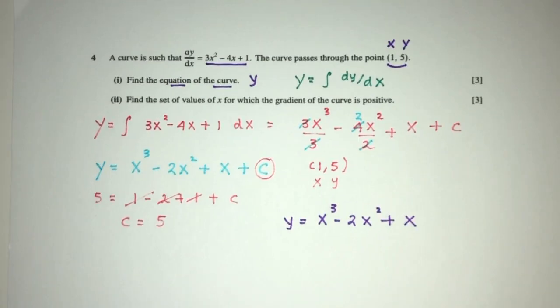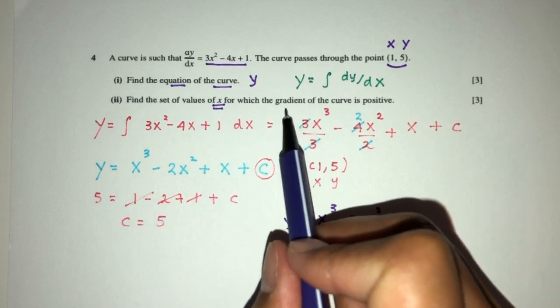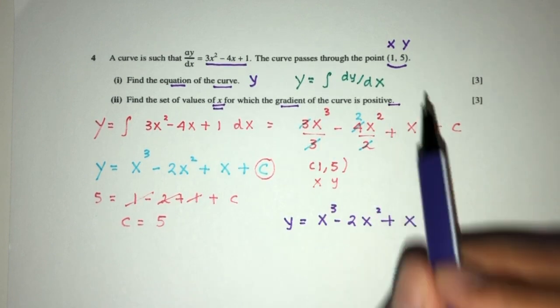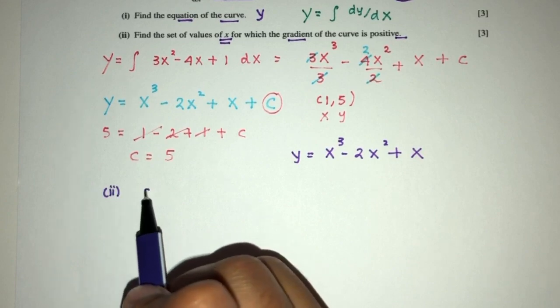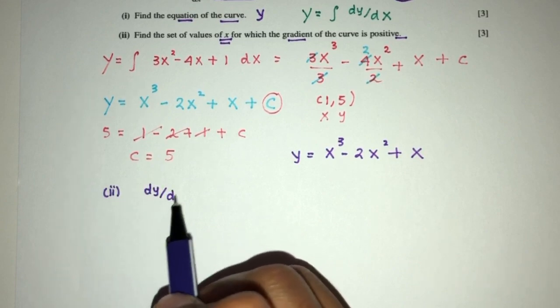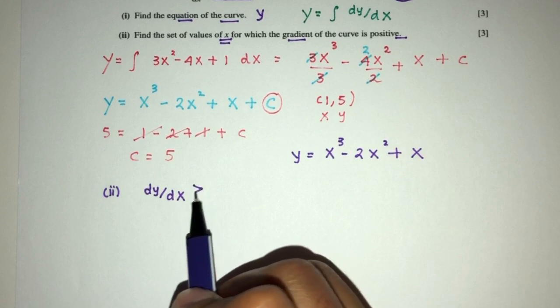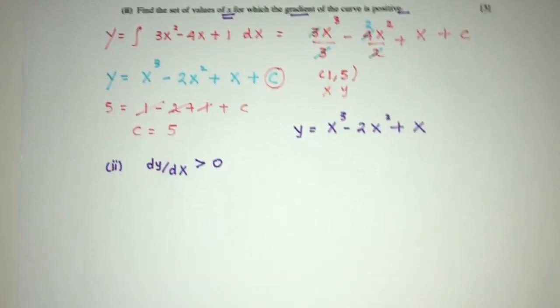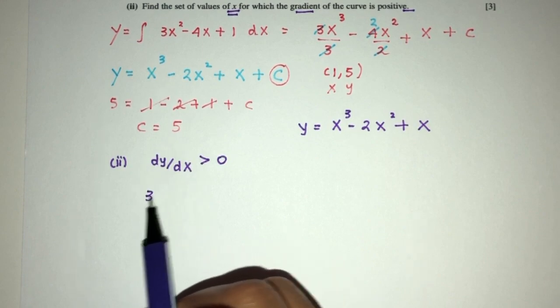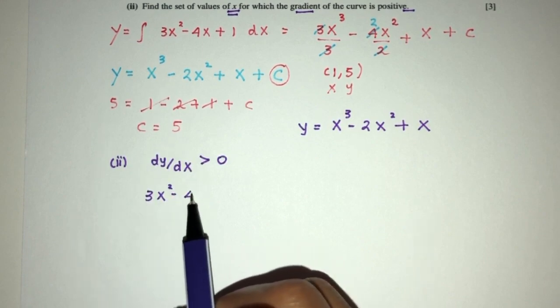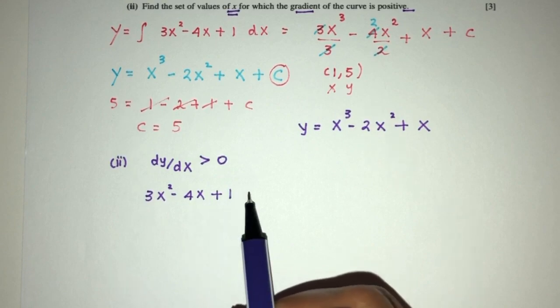Now, for part 2, we have to find the set of values of x for which the gradient is positive. We understand the gradient is simply dy by dx. So we are trying to find the values of x for which dy by dx will be more than 0. So let's replace and find out.